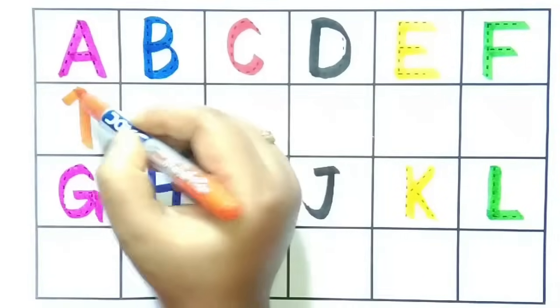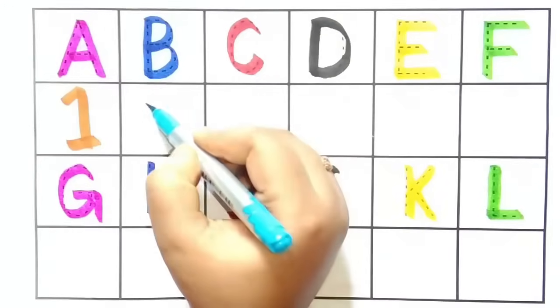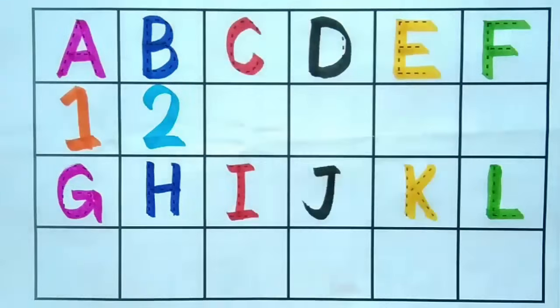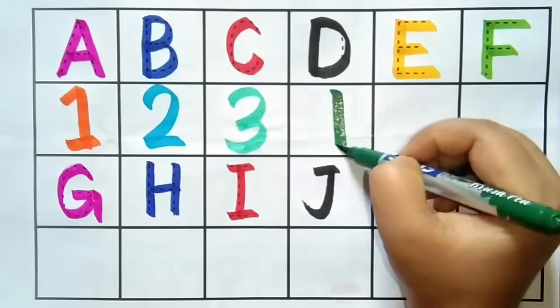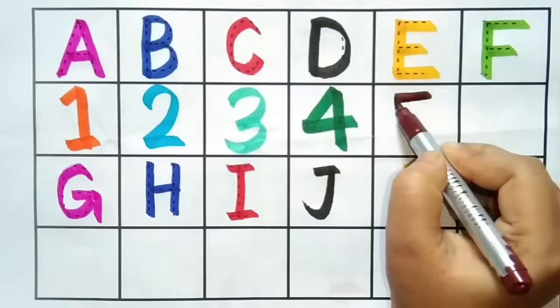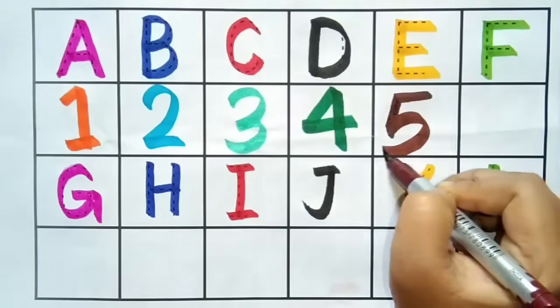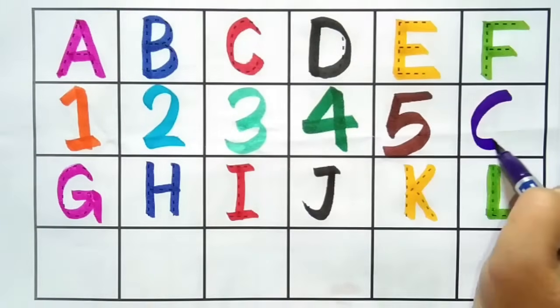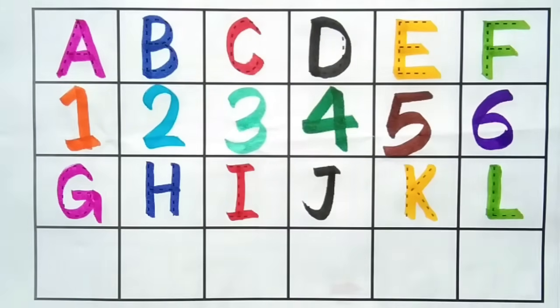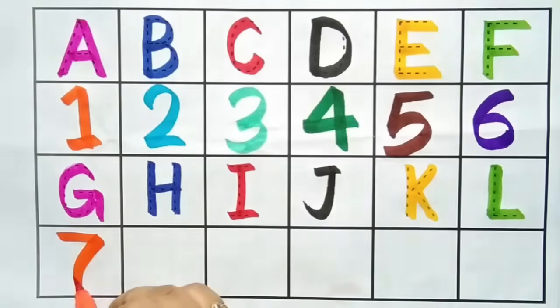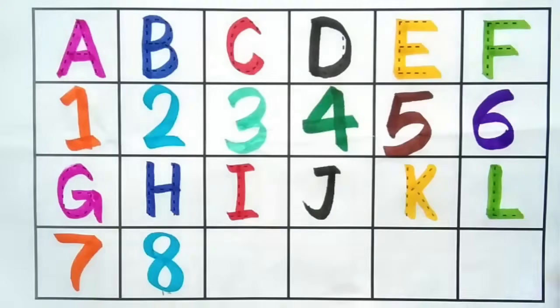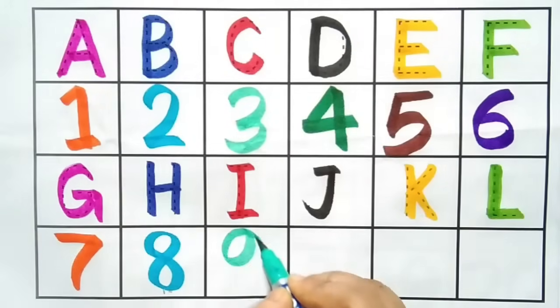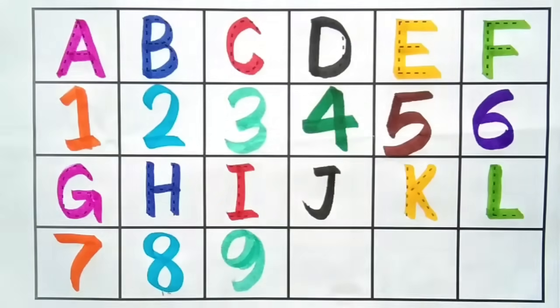One. Yeh hai number one. Two. Yeh hai number two. Three. Yeh hai number three. Four. Yeh hai number four. Five. Yeh hai number five. Six. Yeh hai number six. Seven. Yeh hai number seven. Eight. Yeh hai number eight. Nine. Yeh hai number nine.